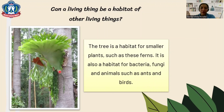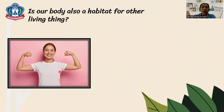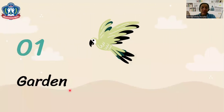The tree is also a habitat for bacteria, fungi, and animals such as ants and birds. Is our body also a habitat for other living things? Yes — many kinds of bacteria and fungi live in our skin and various parts of our body. Some bacteria can make us sick, but some are useful. For example, bacteria that live in our intestines help break down our food.